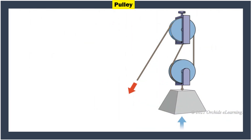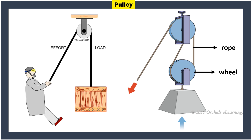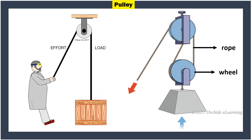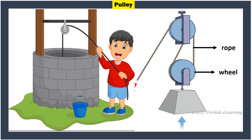Pulley: A pulley is a simple machine that has a grooved wheel and a rope running between the grooves of the wheel. It is used to lift heavy objects attached to one end of the rope. Drawing water from a well with the help of a pulley is an example.